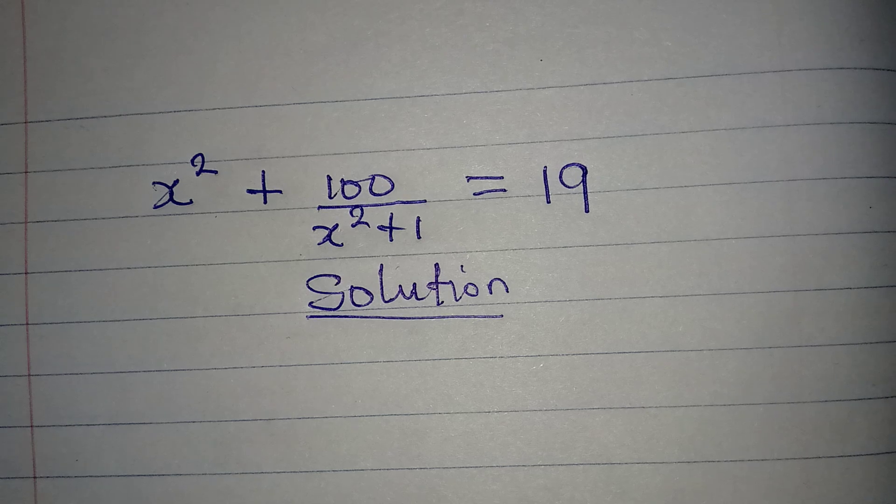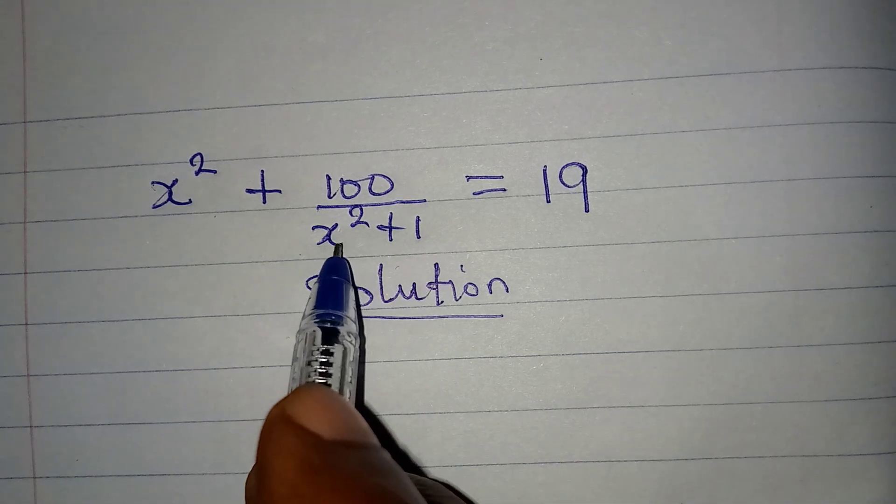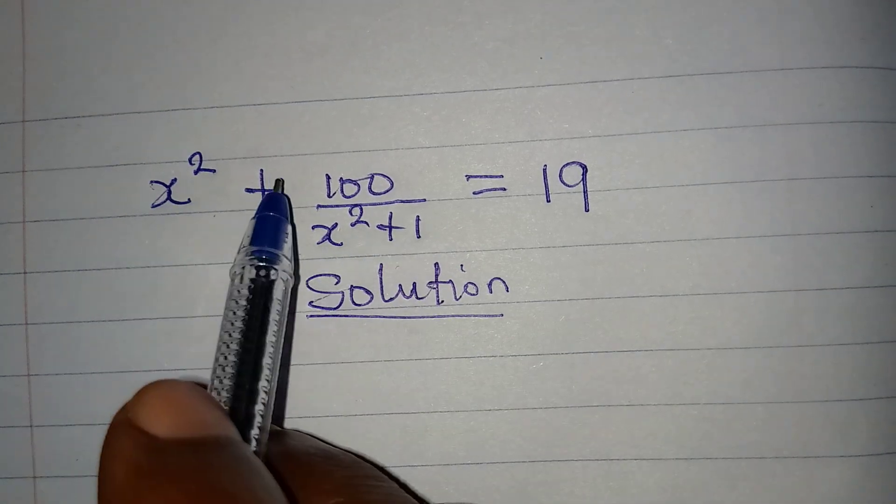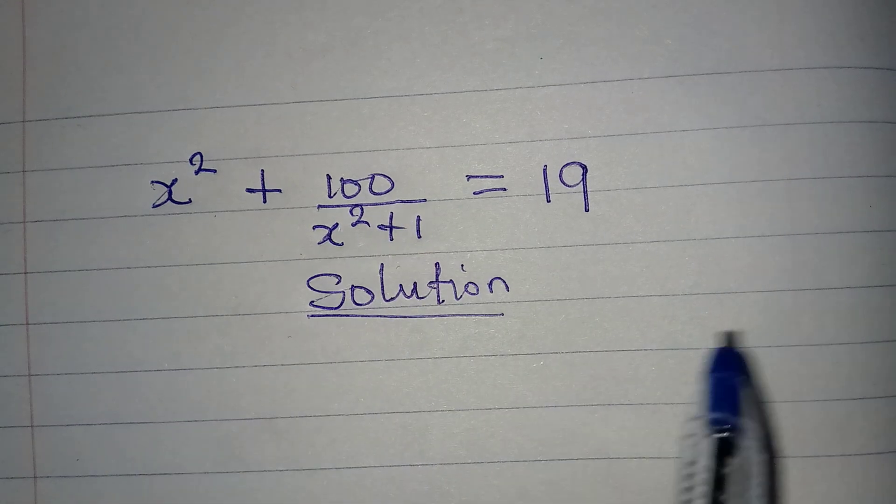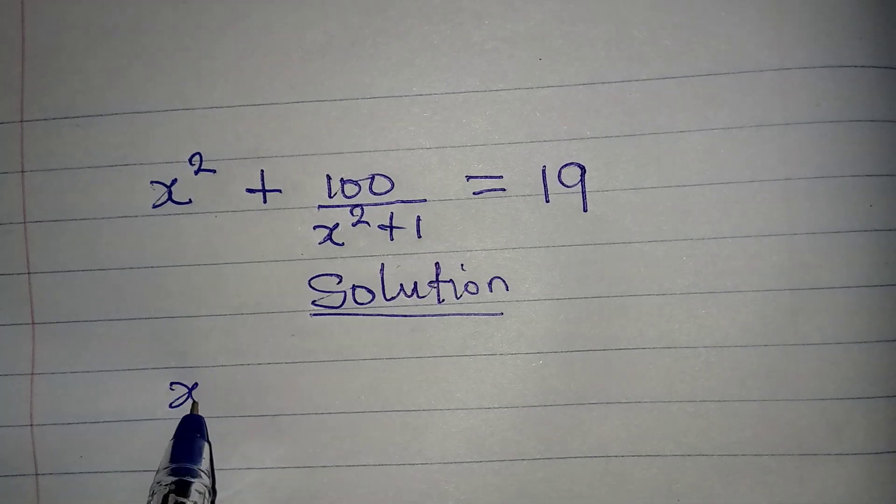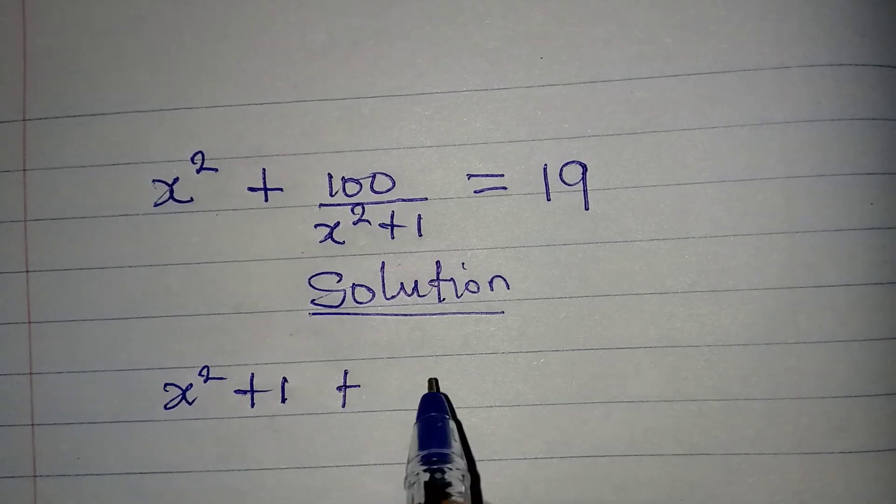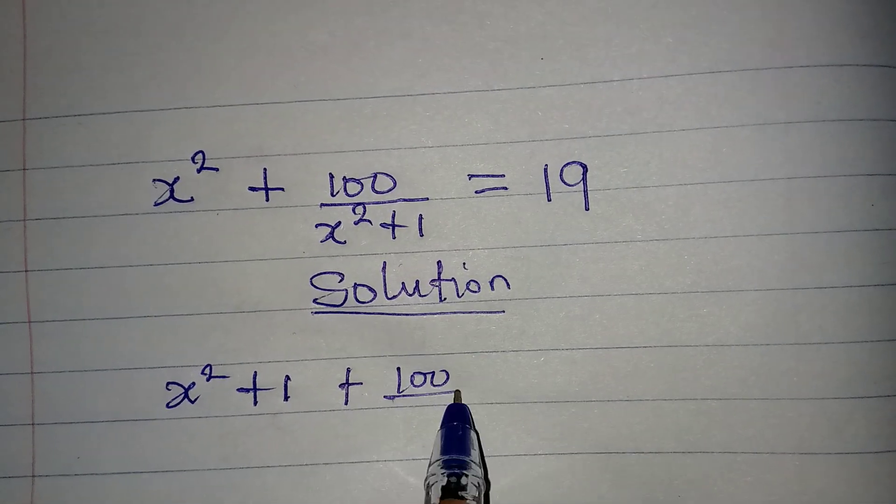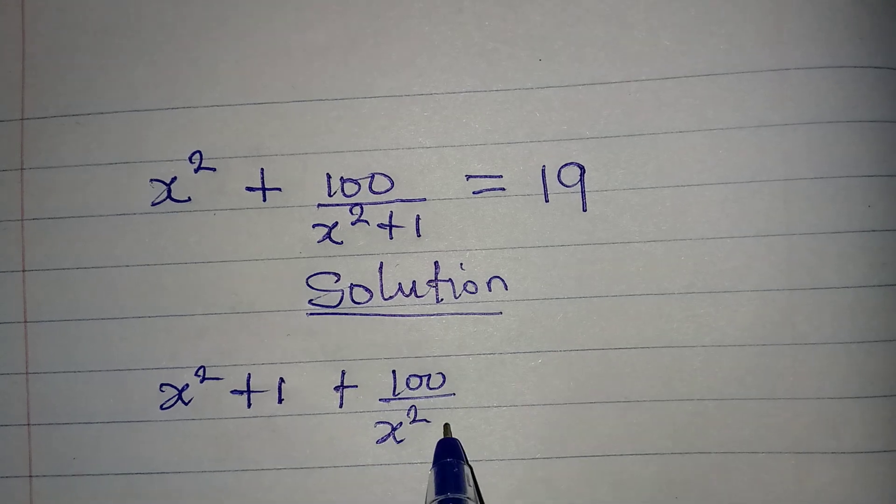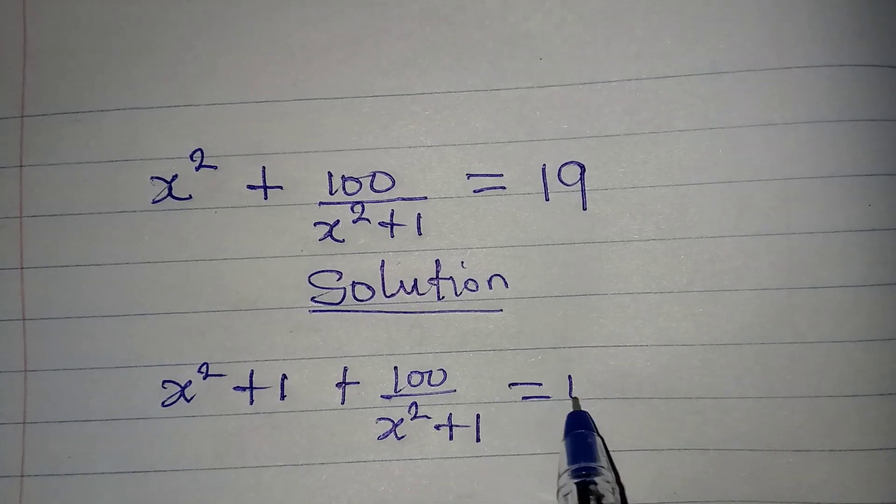We have x squared plus 1 here, so I want to introduce 1 to both sides. So that would be x squared plus 1, then plus 100 over x squared plus 1, equal to 19 plus 1.